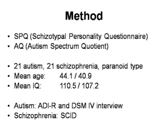So that's what we tried to examine. For our method, we used the SPQ, the Schizotypal Personality Questionnaire. It has been developed for schizotypical individuals but has also been validated for adults with schizophrenia. It consists of positive symptoms, negative symptoms, and symptoms of disorganization. We also used the AQ, the Autism Spectrum Quotient, which examines autistic features.